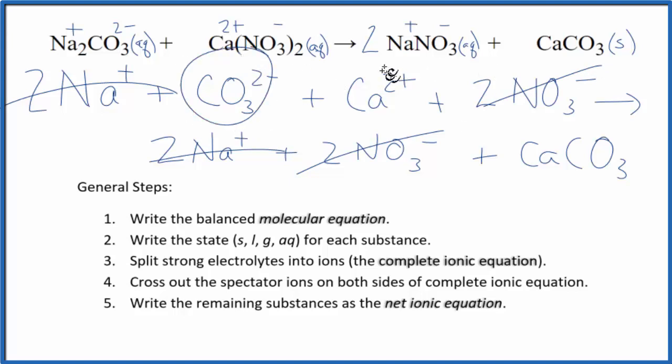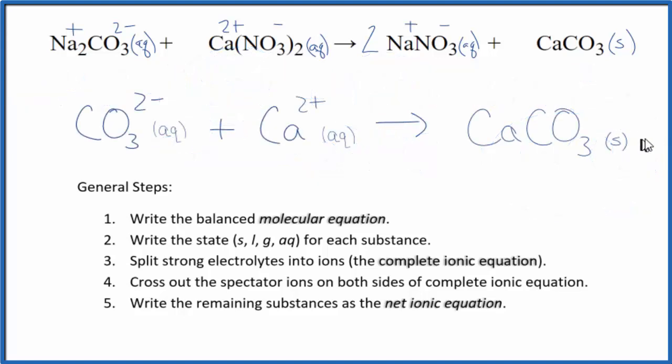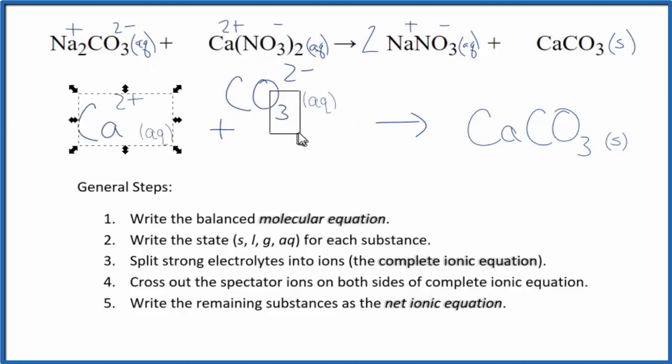But everything else is unique. So this is the net ionic equation. I'll clean this up and write the states in. And we'll have our net ionic equation for Na2CO3 plus Ca(NO3)2. Often you'll see the positive ion written first. It really doesn't matter, but let's do that. There we go. So this is our net ionic equation.